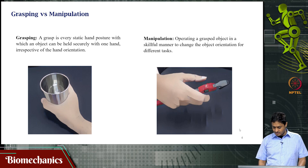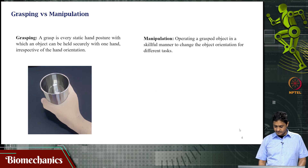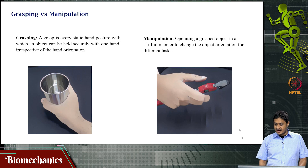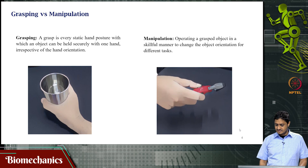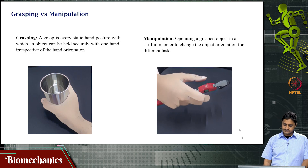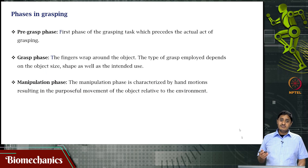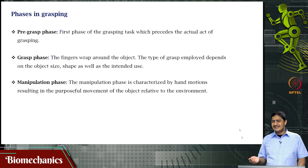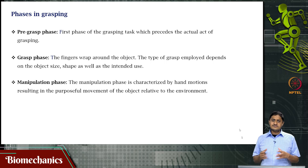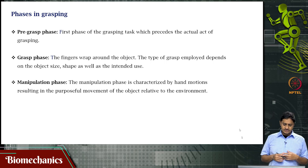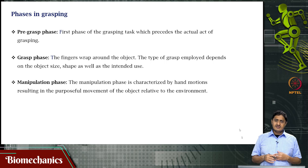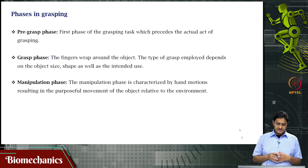A handheld tool being manipulated — holding the object and changing its mechanical characteristics in terms of orientation, with possible slight translation. Grasping itself can be classified into three distinct phases, or two if manipulation is not included.